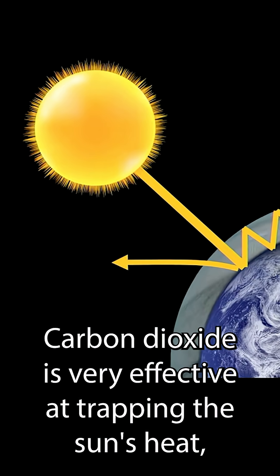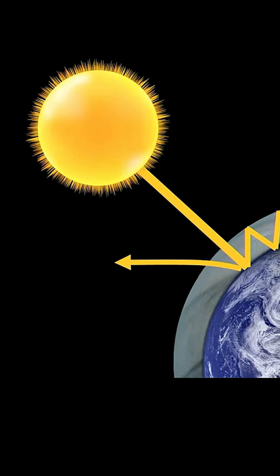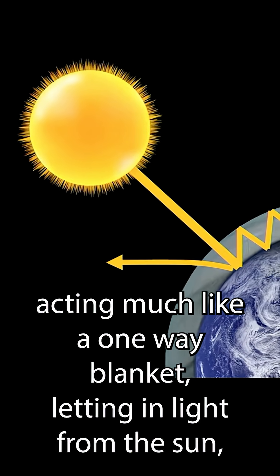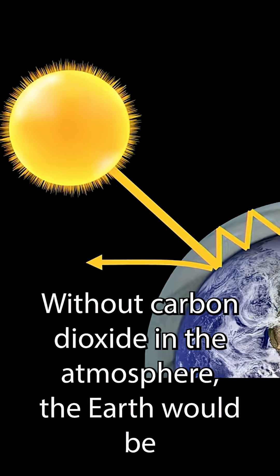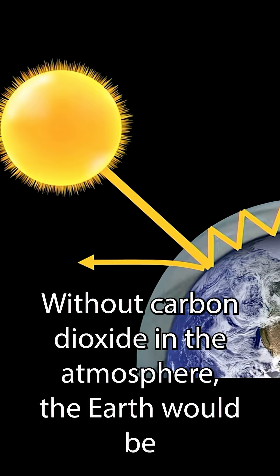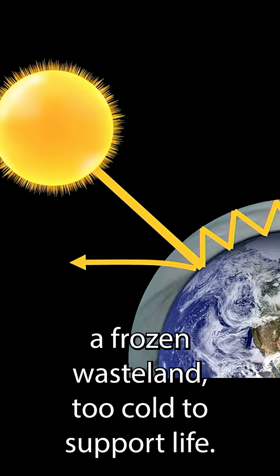Carbon dioxide is very effective at trapping the sun's heat, acting much like a one-way blanket letting in light from the sun but stopping heat from escaping back to space. Without carbon dioxide in the atmosphere, the Earth would be a frozen wasteland, too cold to support life.